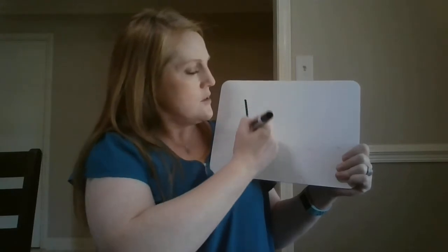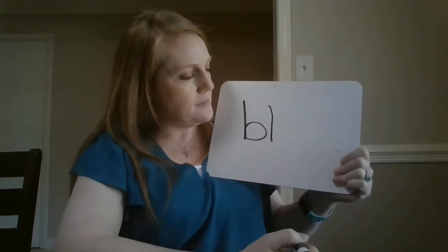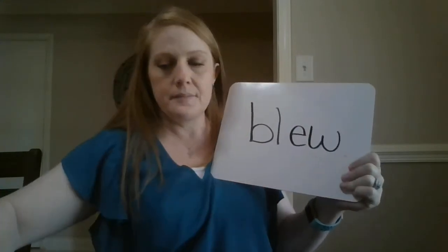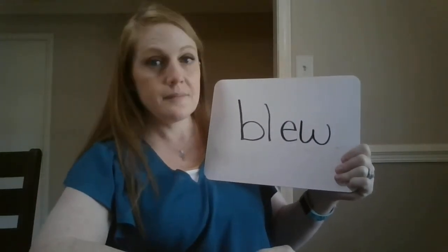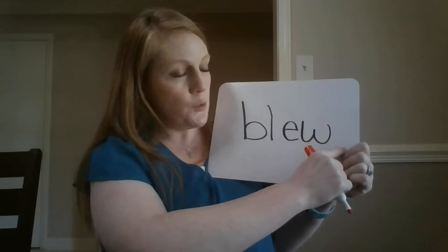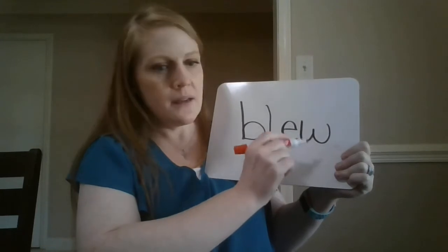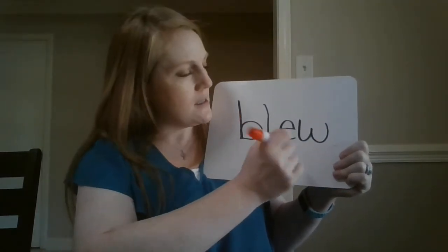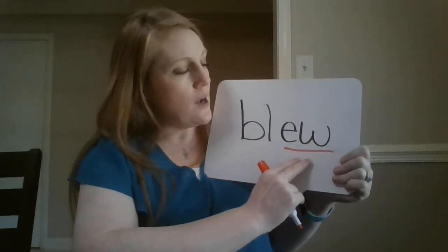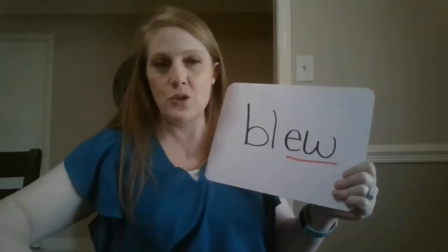I'm going to start this one off with a consonant blend. You should have said BL-OO. What is this word? Blue. We have just talked about the other blue, B-L-U-E, and that was the color. And now we're going to talk about the other blue with the wind — E-W is that OO spelling.